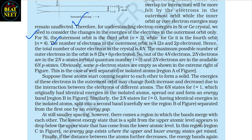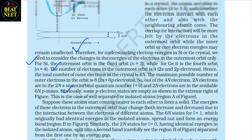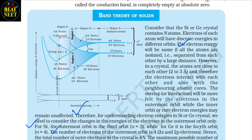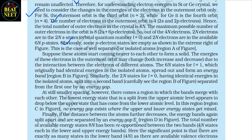For silicon the outermost orbit is the third orbit (n=3), while for germanium it is the fourth orbit (n=4). The number of electrons in the outermost orbit is 4 (2s and 2p electrons). Hence the total number of outer electrons in the crystal is 4N. The maximum possible number of outer electrons in the orbit is 8 (2s + 6p electrons). So out of the 4N electrons, 2N electrons are in the 2Ns state (orbital quantum number L=0) and 2N electrons are in the available 6Np states. Obviously some p electron states are empty. When atoms start coming nearer, the 6N states for L=1 spread out and form an energy band (region B in figure).